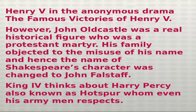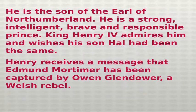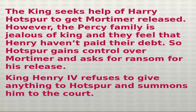King Henry IV thinks about Harry Percy, also known as Hotspur, whom even his army men respect. He is the son of the Earl of Northumberland — a strong, intelligent, brave, and responsible warrior. King Henry IV admires him and wishes his son Hal had been the same. Henry receives a message that Edmund Mortimer has been captured by Owen Glendower, a Welsh rebel. The King seeks help from Hotspur to get Mortimer released. However, the Percy family is jealous of the King, and feeling that Henry hasn't paid their debt, Hotspur takes control of Mortimer and asks for a ransom. King Henry IV refuses and summons Hotspur to court.